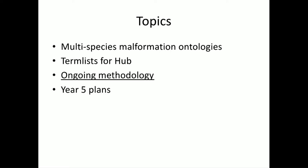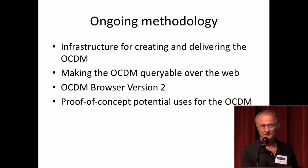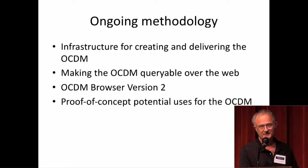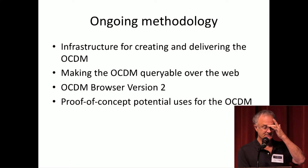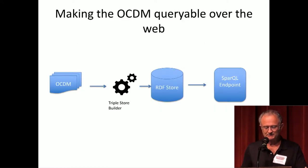Todd Detweiler — sitting in back with a poster — has been developing tools for creating and delivering the OCDM: a lot of scripts and programming that we deliver at every milestone to the hub. We also want to show how the OCDM could be usable, so he's built tools for making the OCDM queryable over the web, independently of the hub so any system can query it. Based on that endpoint, he's created a new version of our OCDM browser. This year he's used this browser to show some proof-of-concept potential uses for the OCDM, though they're nowhere near ready for widespread use.